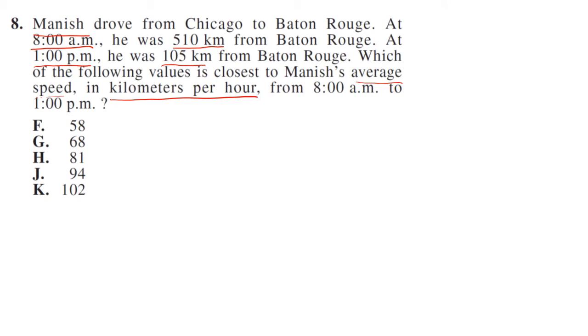So this is going to be a distance rate time question. So we have our distance rate time pyramid. So if you're looking for distance is rate times time, but we're looking for rate. So we need our distance, which would be 510 minus 105, so that is 405. That's his distance that he traveled. And then his time, 8 to 1, is 5 hours. So you write that out if you need to.